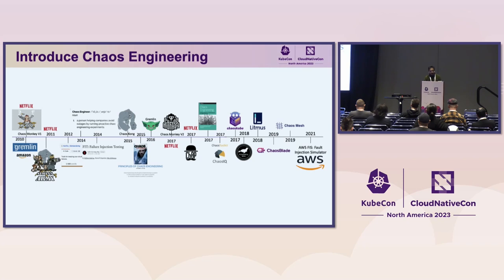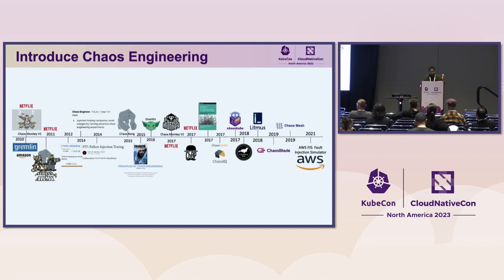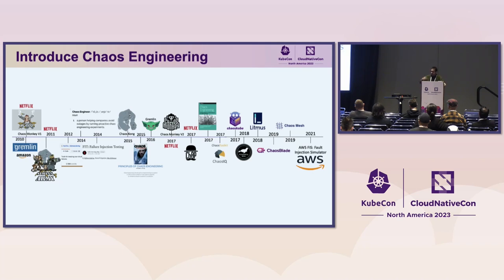Netflix's approach worked well for them. Slowly they started writing more engineering blogs on how they were implementing failure scenarios, driving a cultural shift — similar to the cultural shift of DevOps. As you can see on the timeline, different organizations and companies came in, and by 2017, more and more open source projects appeared: Chaos Toolkit, Chaos Cube, Litmus, Chaos Mesh, Chaos Blade, and others. Cloud providers then began offering SaaS-type offerings along with tools like Gremlin. This was a combined effort over the years, with knowledge transitioning across production systems alongside the adoption of cloud-native technology.